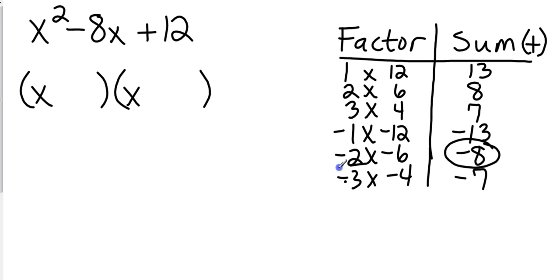So my factors are negative 2 and negative 6. So x minus 2, x minus 6. And that is factored. Now, if they ask me to solve it, again, I tee it up and set each factor equal to 0.